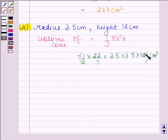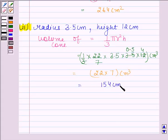On cancelling 12 by 3 we get 4, and on cancelling 3.5 by 7 we get 0.5, and on further simplifying it we get 22 × 7 cm³, and this is equal to 154 cm³.